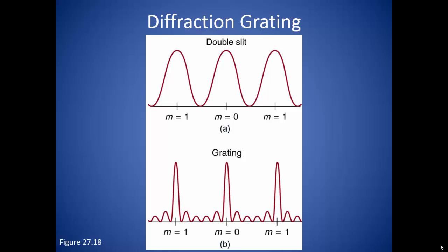Because there are a lot of slits, there is no good way to define which peak is m equals zero. So we call these peaks the principal maxima.